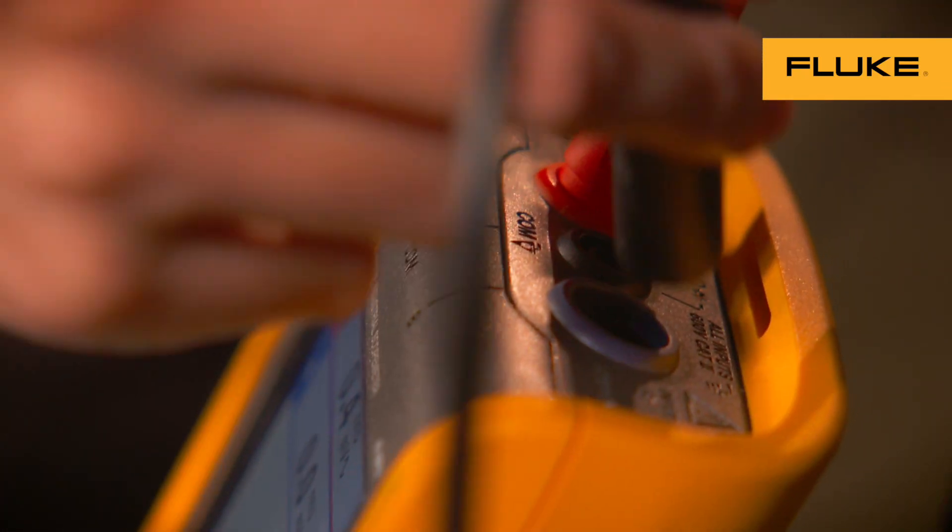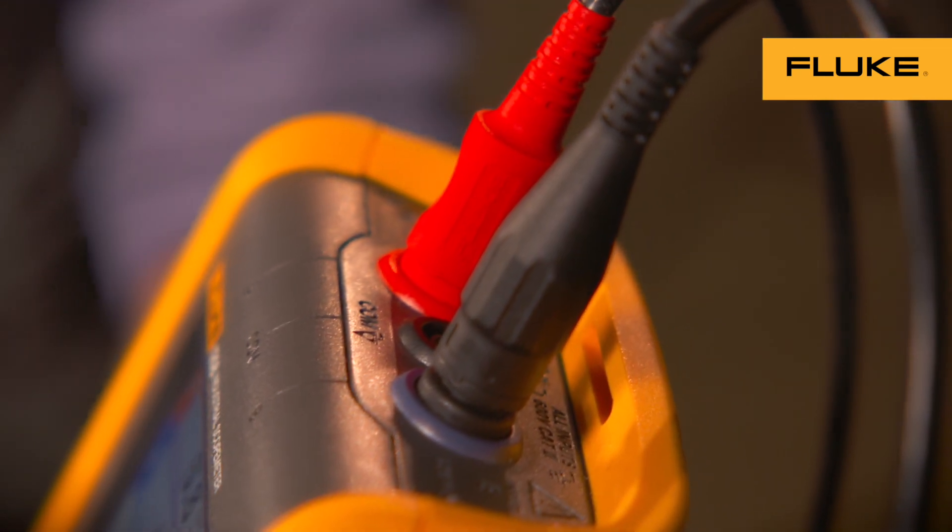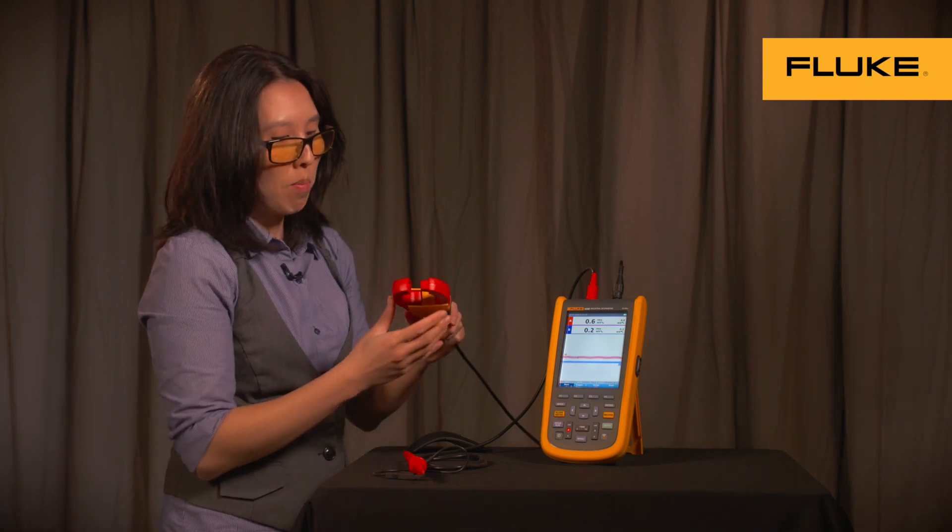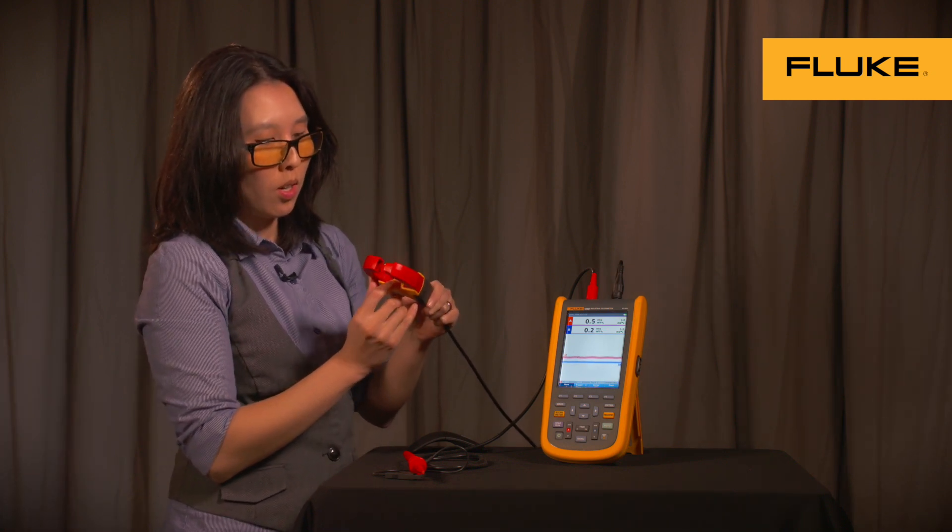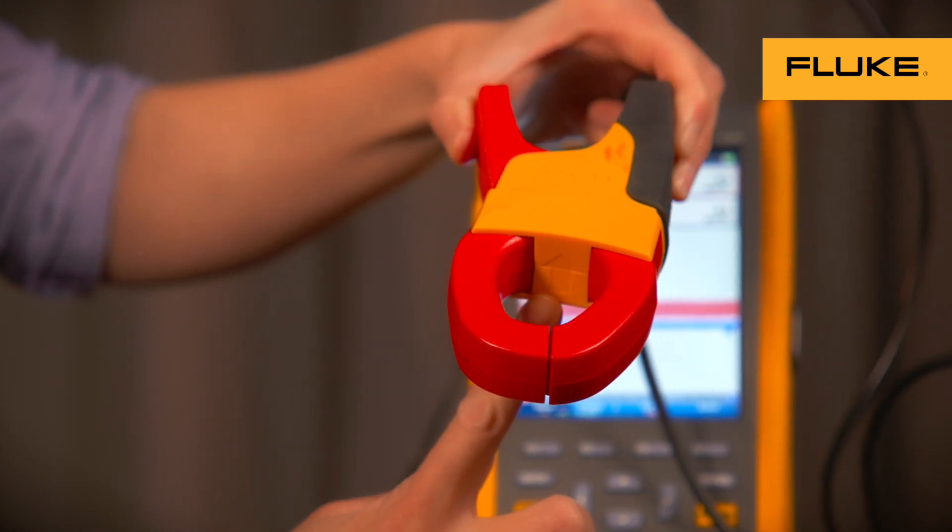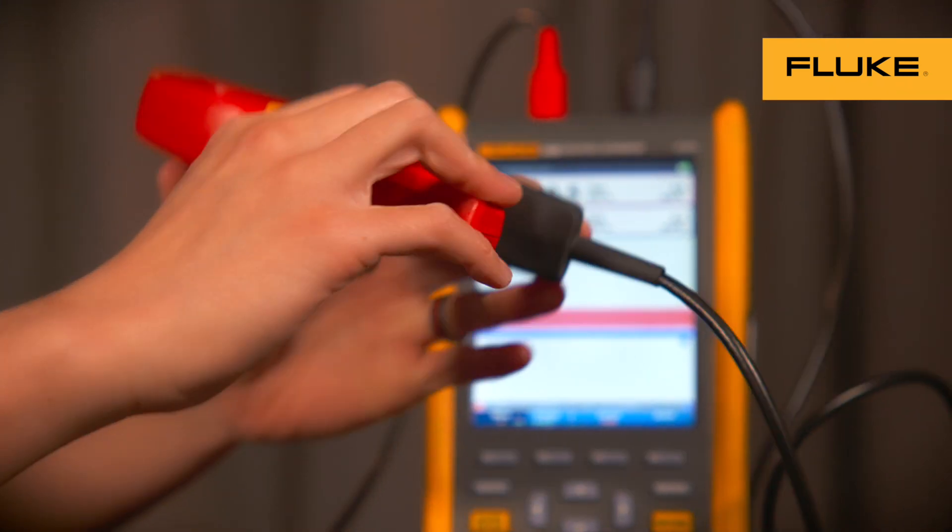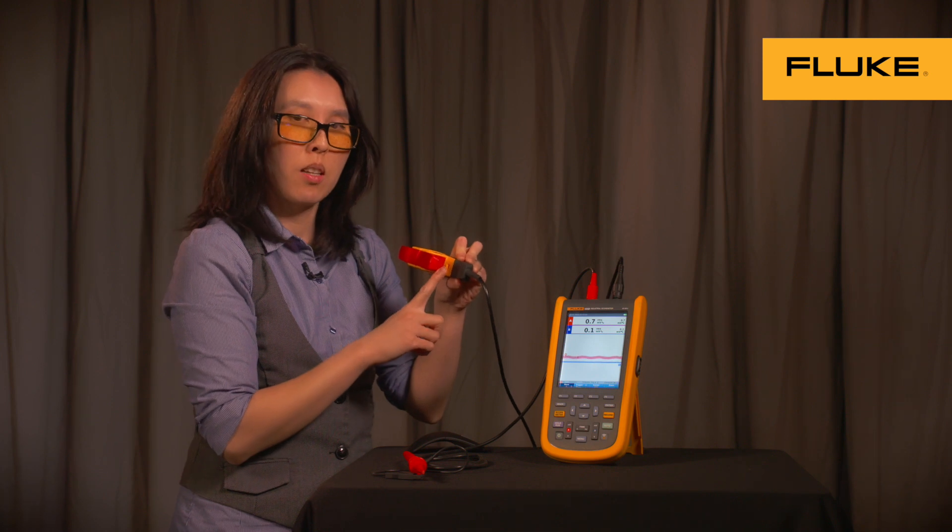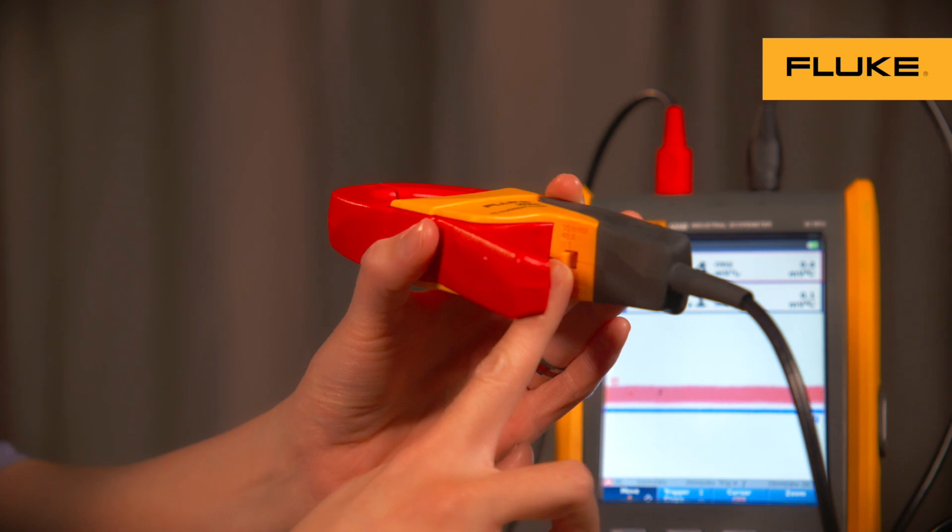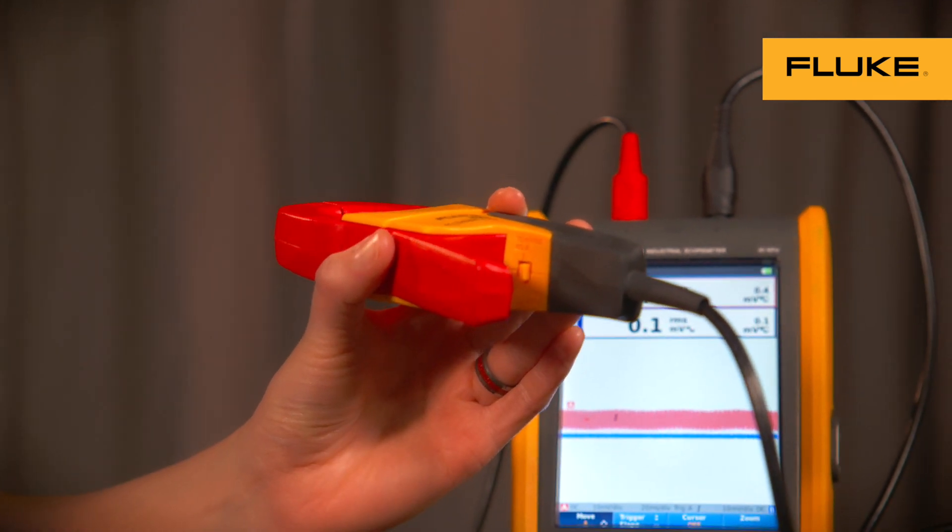Now you can hook your AC current clamp up to the instrument and clamp on to your current source. And keep in mind, when you're clamping on to the current source, this arrow right here on the inside, make sure that it's pointing towards the load. And also, you have the right sensitivity selected for your application. You can choose between 10 mV per amp or 1 mV per amp.